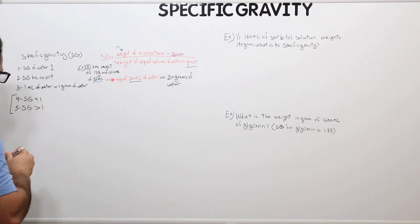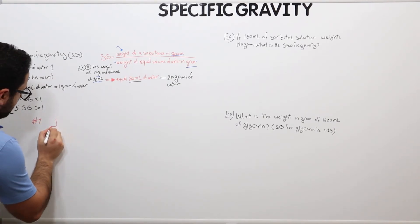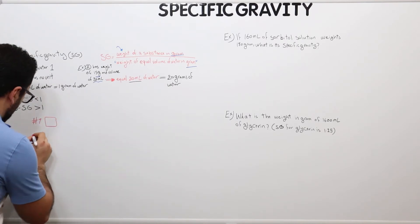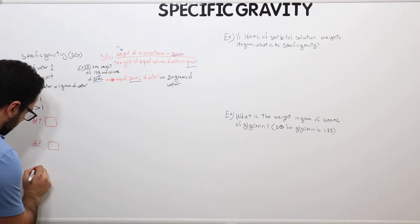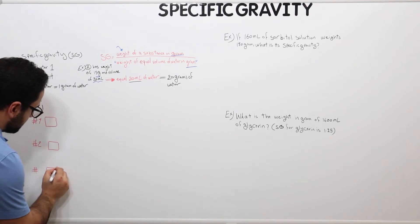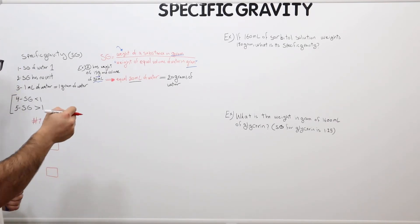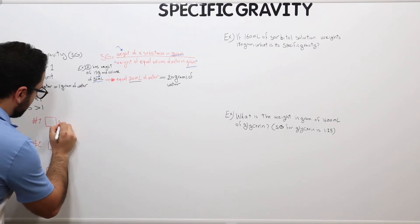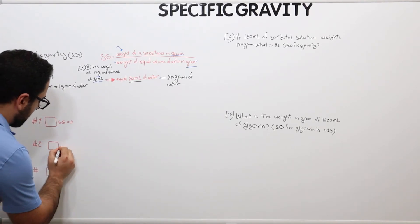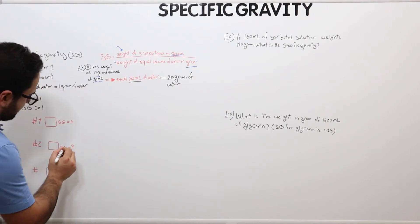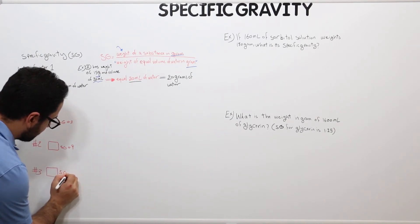Let's take some examples to understand what numbers four and five mean. I have three objects — object number 1, object number 2, and object number 3. Object 1 has a specific gravity of 0.3, object 2 has a specific gravity of 0.9, and object 3 has a specific gravity of 1.1.